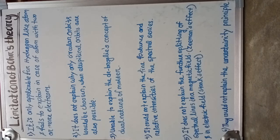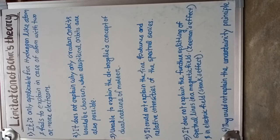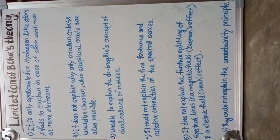Hello students, welcome back to our EGIS class. Let's go to the limitations of Bohr's theory. In the previous class, we discussed Bohr's atomic model, in which we covered Bohr's postulates, radius of different orbits, velocity of an electron in different orbits, energy of different orbits, and wavelength of electromagnetic radiation. One of the best advantages of Bohr's theory is that he explained about the stability of an atom, which was the drawback of Rutherford's atomic model.